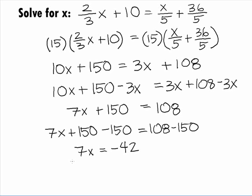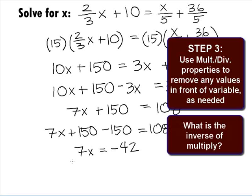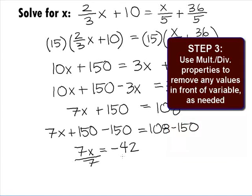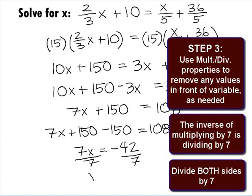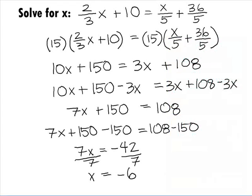We are not done because x is not by itself. In Step 3, we want to use the multiplication or division property of equality to remove any values that are in front of the variable. We need to move that 7 as being multiplied times the x. What is the inverse of multiply? Divide. So we need to divide both sides by 7. On the left side, that's going to leave us with x equals and on the right side, we end up with a negative 6. So our final answer is x equals negative 6.